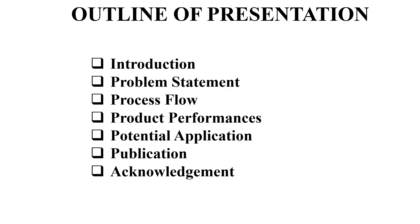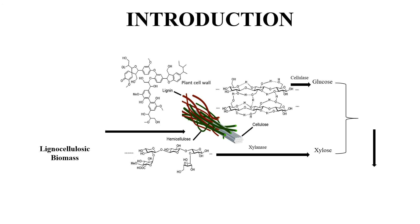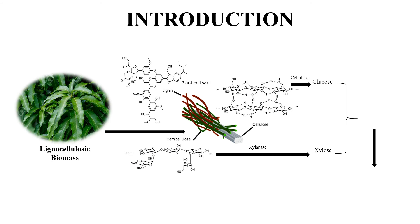My presentation will include sections as displayed. Before I proceed further, I would like to briefly give an introduction to my research work. My research work could be described as the implementation of lignocellulosic biomass for bioethanol production. Basically, the lignocellulosic biomass is made up of cellulose and hemicellulose that can be converted into fermentable sugar to produce bioethanol.